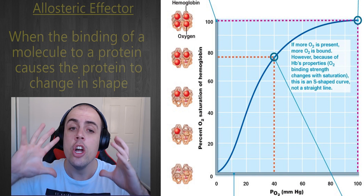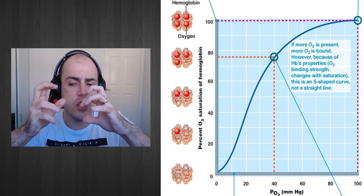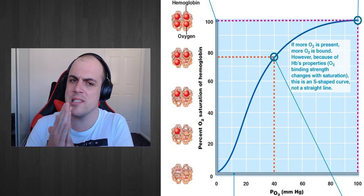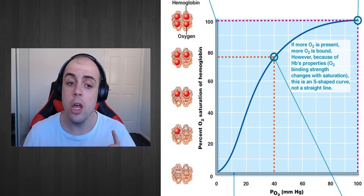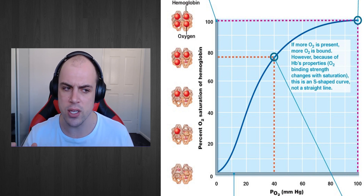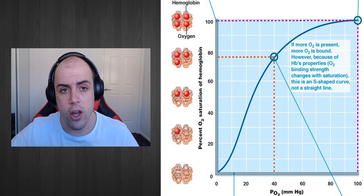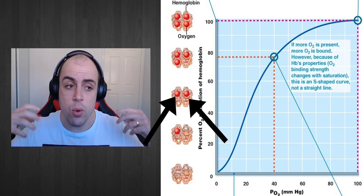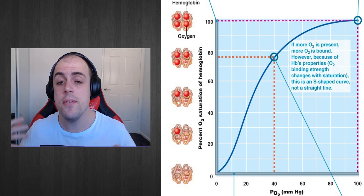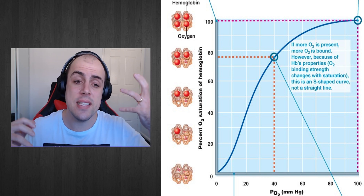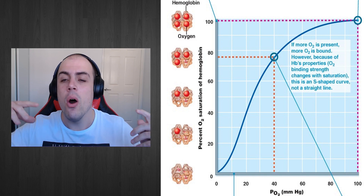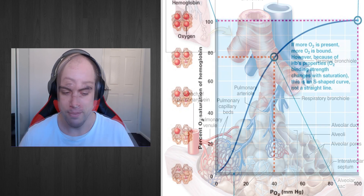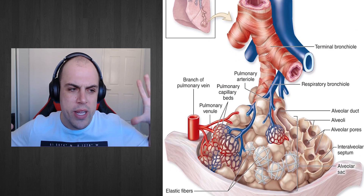Once one oxygen binds, it acts as an allosteric effector, causing hemoglobin to begin shifting its shape towards the R-state. It's like a sliding scale — it's transitioning towards that R-state. That single oxygen binding makes it easier for a second oxygen molecule to bind to one of the other three binding sites. Then a second oxygen binds and pushes hemoglobin even further towards the R-state, making it easier for a third, and so on, until all four oxygen molecules are bound and hemoglobin is firmly in its R-state.